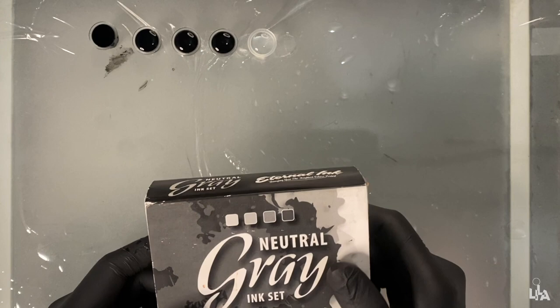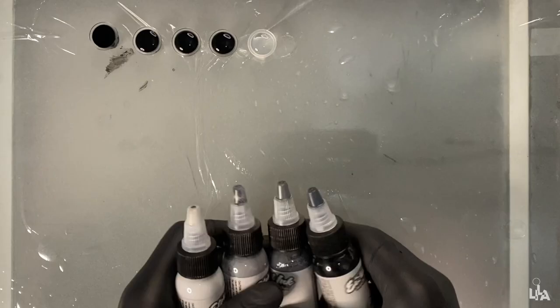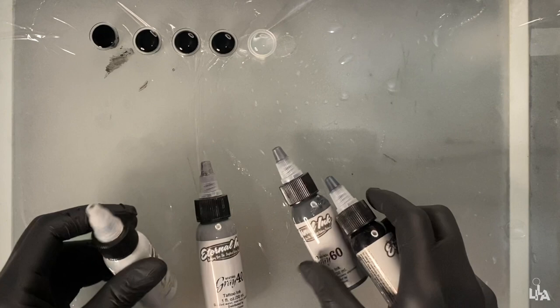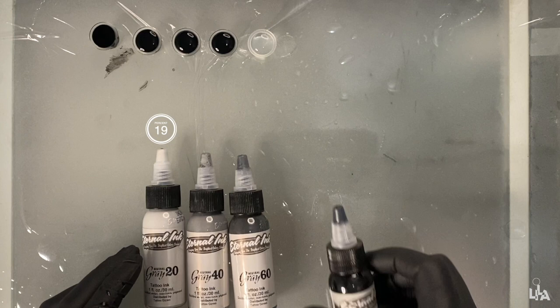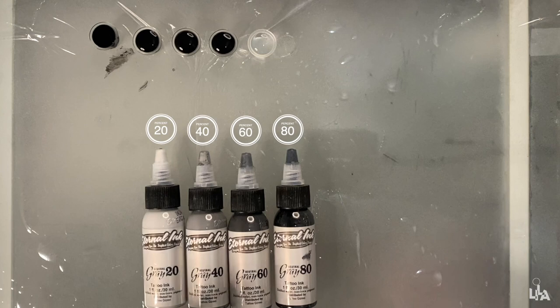So this is not a regular gray wash, let me show you. This is a set of pre-made neutral grays which looks like this. The first one is 20% gray, second is 40%, third is 60%, and the last one is 80%. So I'm gonna use all of it while doing the cover up.